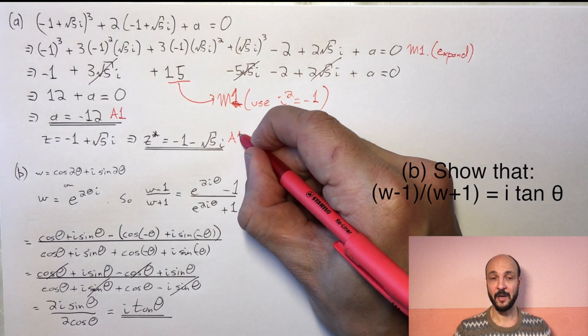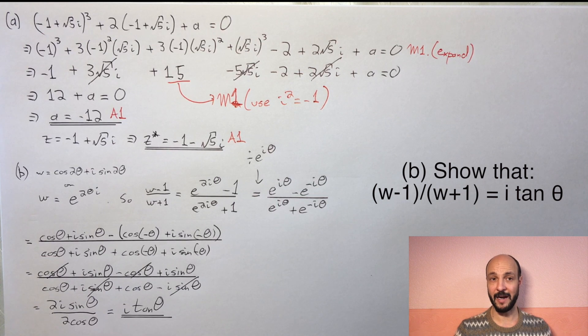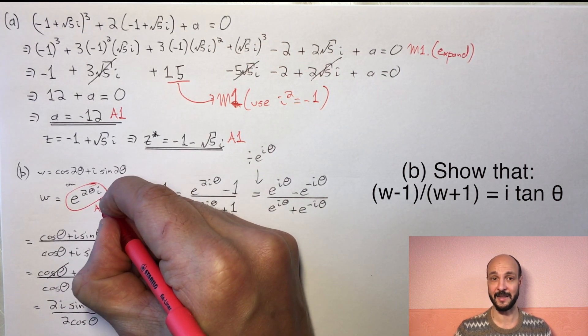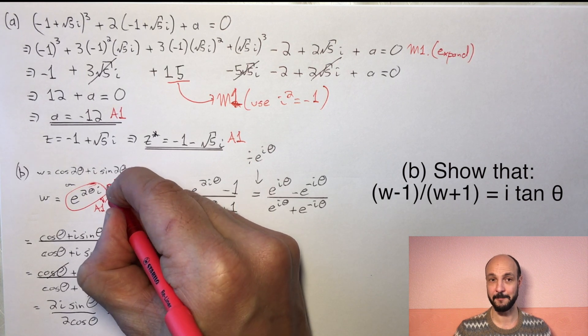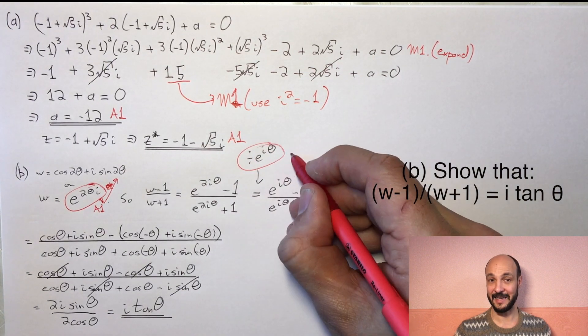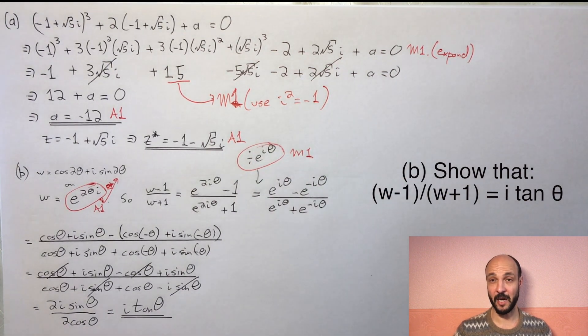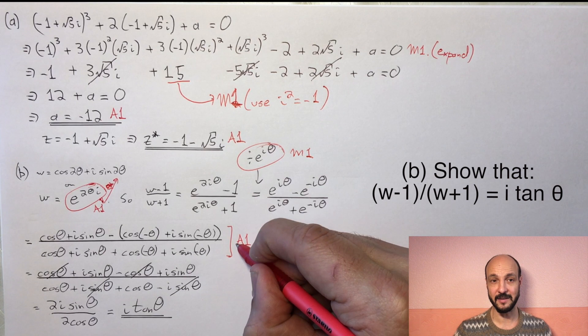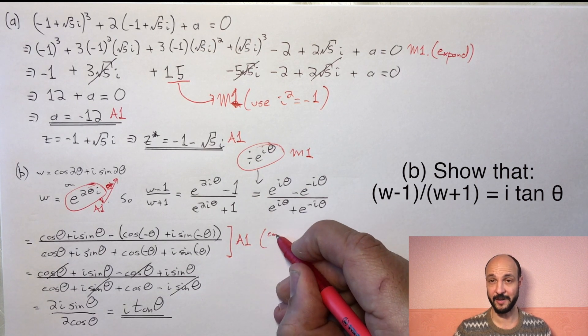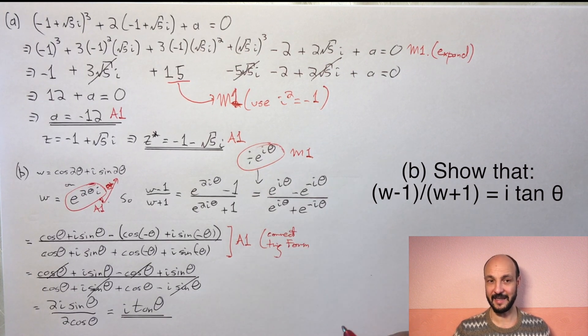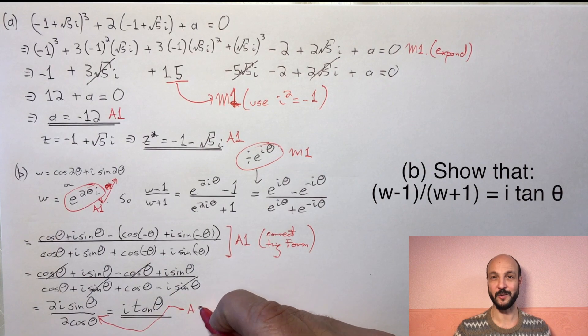The marking in the second part: we get one accuracy mark for rewriting w as e^(2iθ) in our fraction. We get a second mark for dividing through by e^(iθ), and then we get a third mark for switching into the trigonometric form correctly. That's an accuracy mark so we have to have every term exactly correct on that one. And then we get a further accuracy mark for getting something equal to i tan θ, in our case 2i sin θ over 2 cos θ.